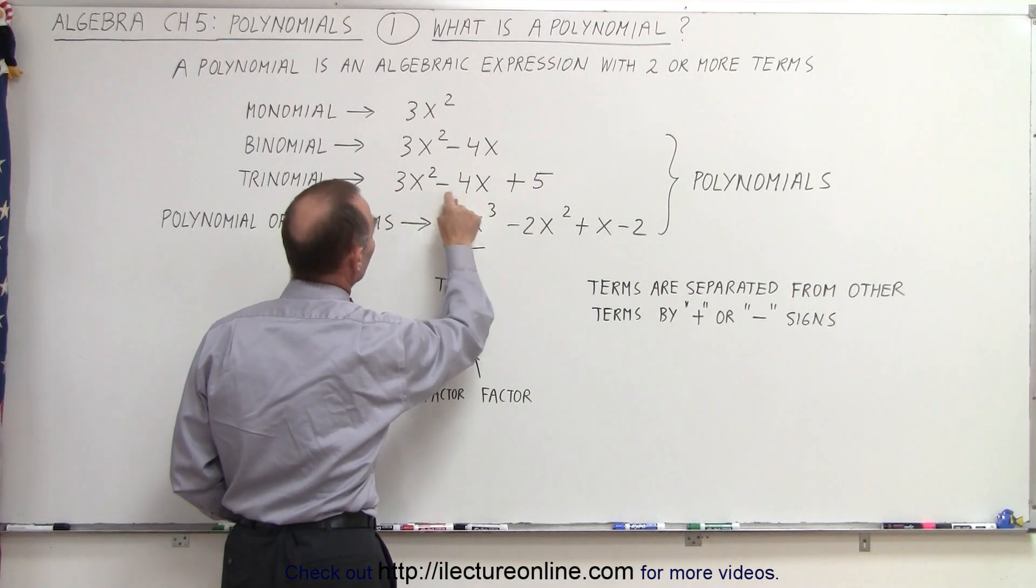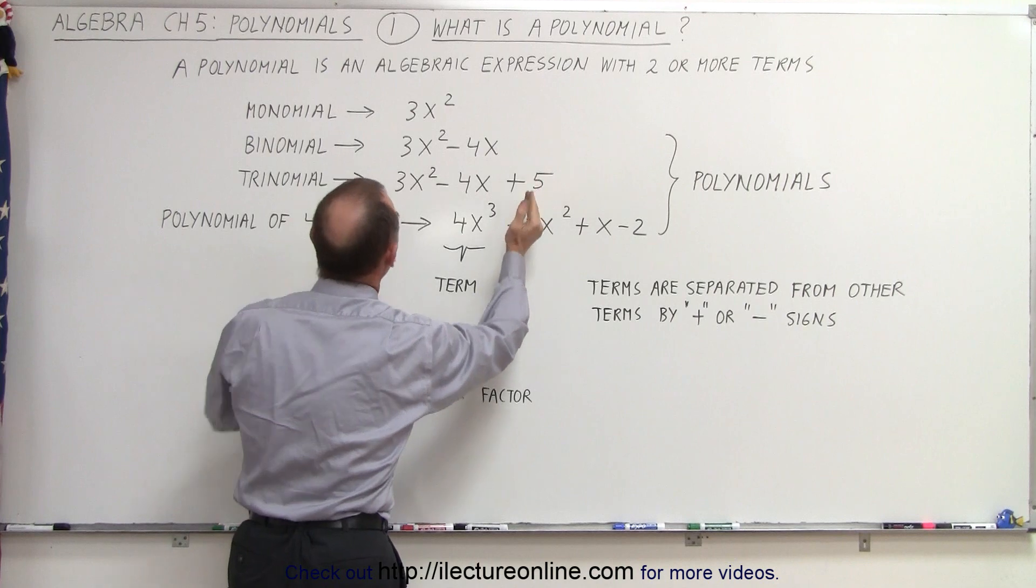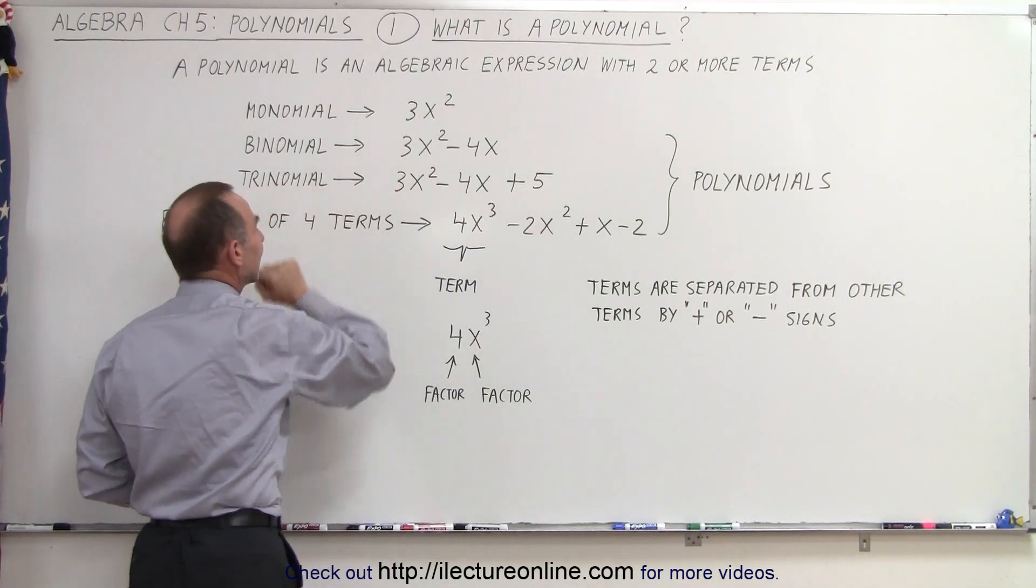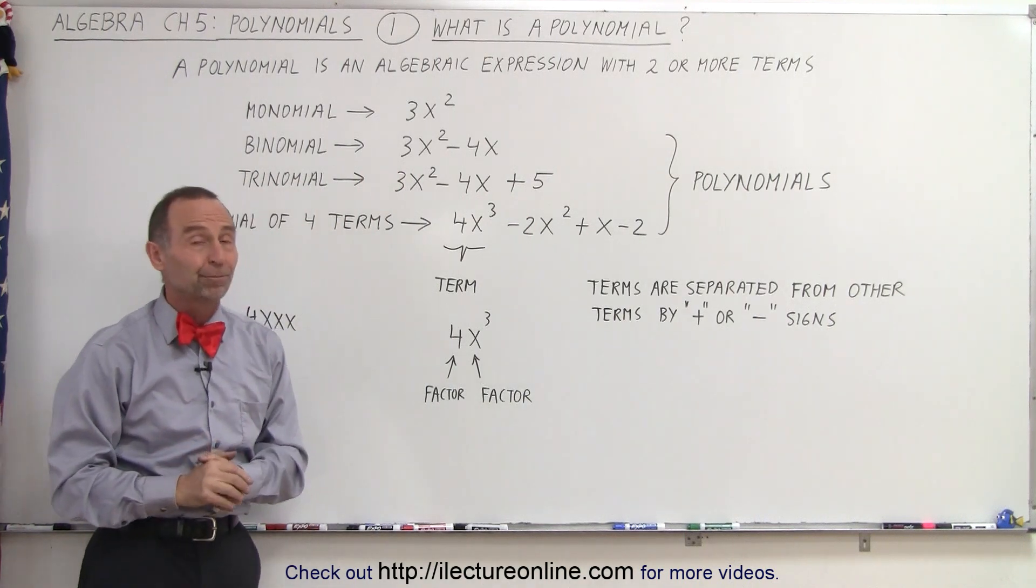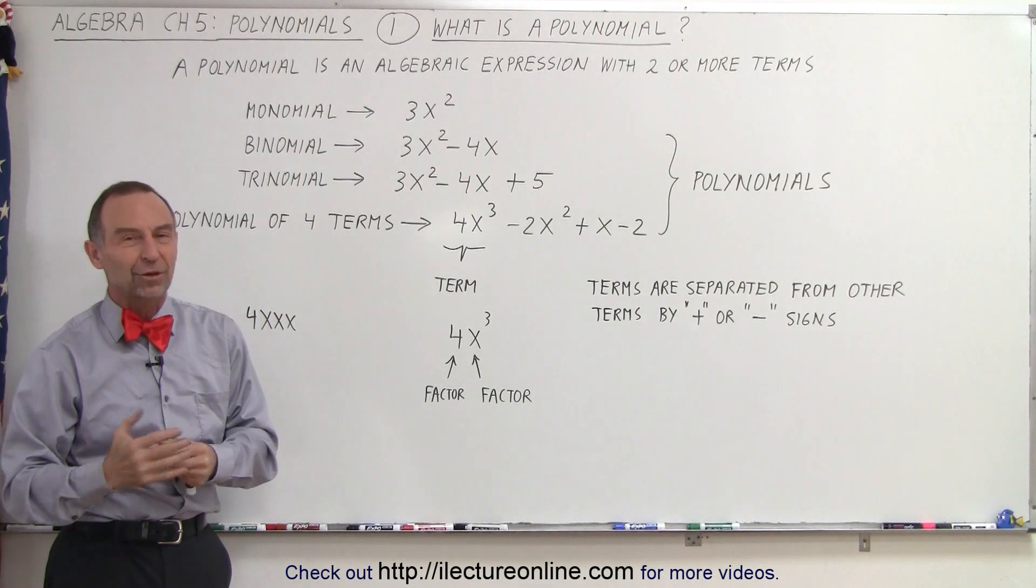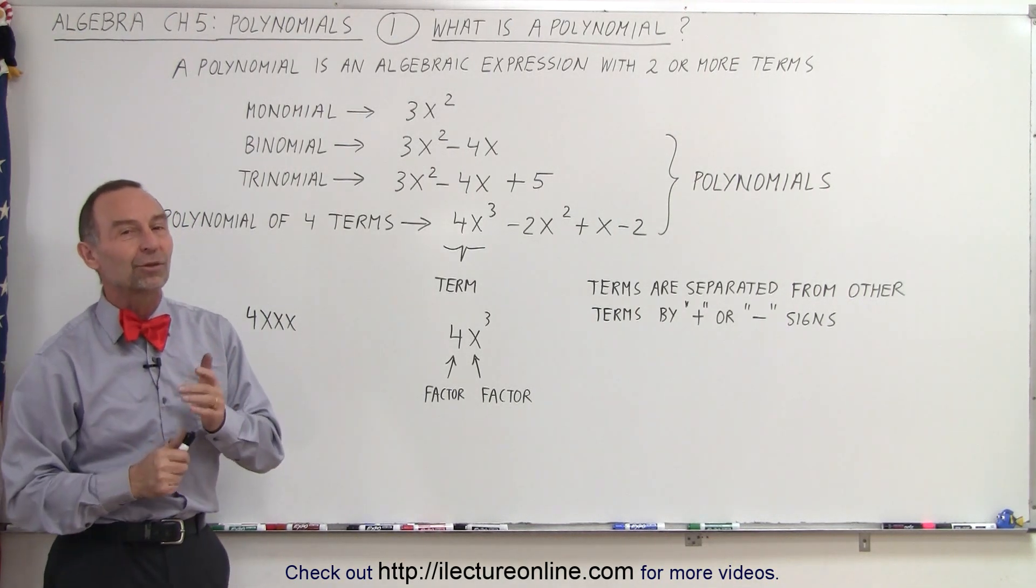So in this case, we have three terms. The three terms together form an algebraic expression, which is called a polynomial. In specific, since there's three terms, we call that a trinomial. So by now, I think we understand what a polynomial is, and we can start working with them. Stay tuned, and we have lots of videos on polynomials coming up.